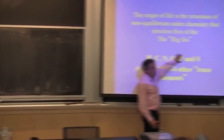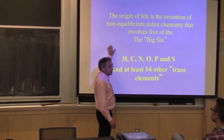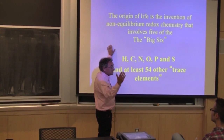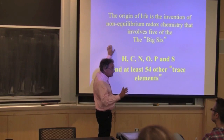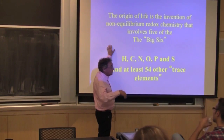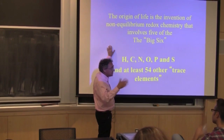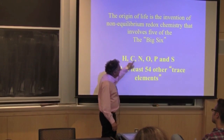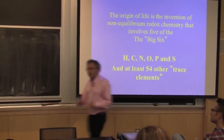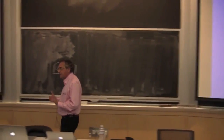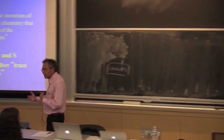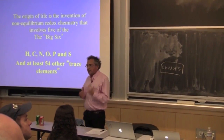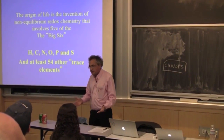So phosphorus becomes, for me, a very boring element. I'm taking it out of the picture for the moment because it's just an element linking things together in the acid-base world — it does not transfer electrons. Once you get even a small fugacity of oxygen on a planet, it's oxidized, and that's it. Hydrogen, carbon, nitrogen, oxygen, and sulfur are all doing a choreographed dance with each other in terms of moving electrons. That is the biology of life.